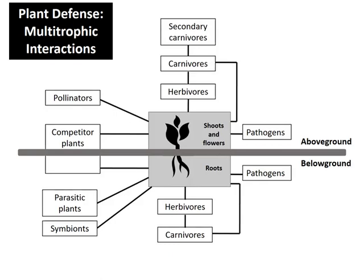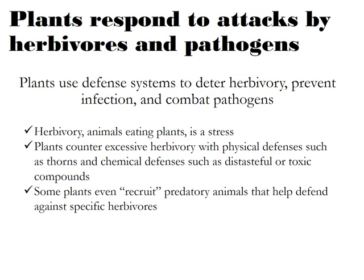Plant defense is a multi-trophic interaction. In the above ground parts of plants there are pathogens, herbivores, carnivores, secondary carnivores, pollinators, and competitor plants. In the below ground parts there are pathogens, herbivores, carnivores, symbionts, parasitic plants, and competitor plants. All these stresses compete with plants for available resources or damage plants by feeding on them, so plants undergo various modifications to counter the harmful effects.